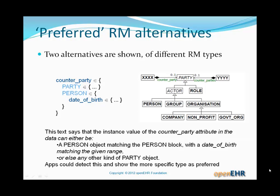Here's a variant on that concept. A class XXXX has an attribute 'counterparty' of type Party. The ADL shows that counterparty is constrained to being either a Party or a Person. Person is a subtype of Party, so this constraint is saying the data must match either a Person object (matching that person block with date-of-birth matching whatever) or any other kind of Party object. If it's a Person object, it has to match the more specific Person constraint. Applications could potentially detect this and show the more specific type as preferred.